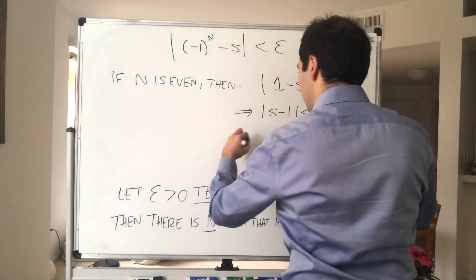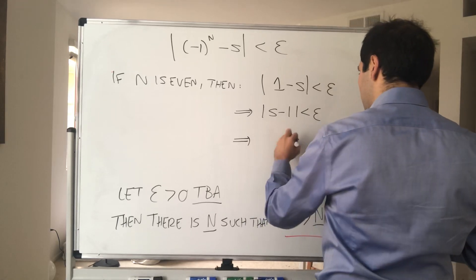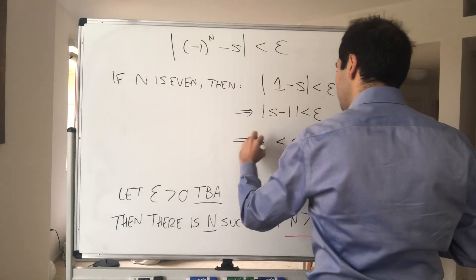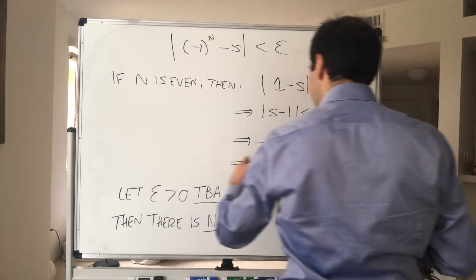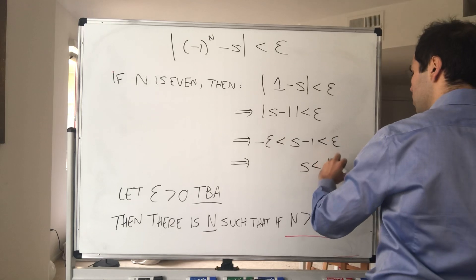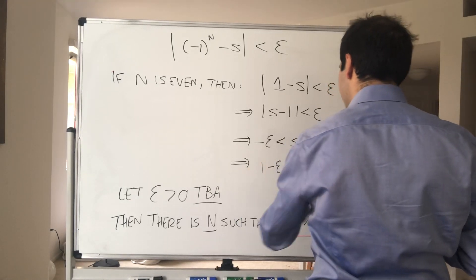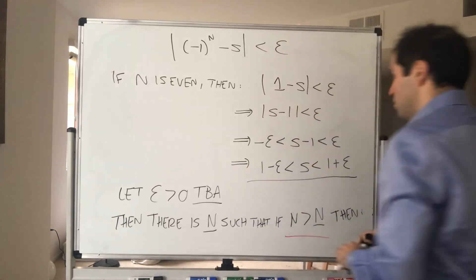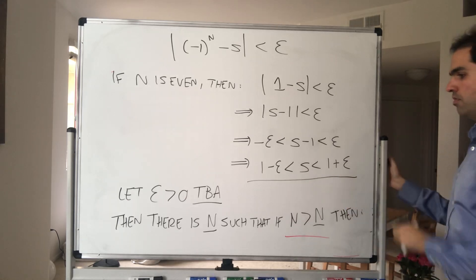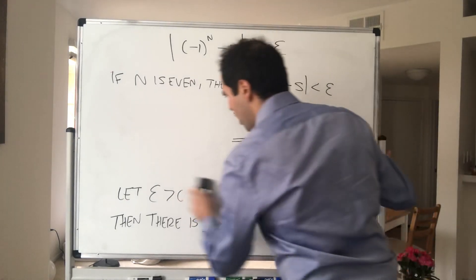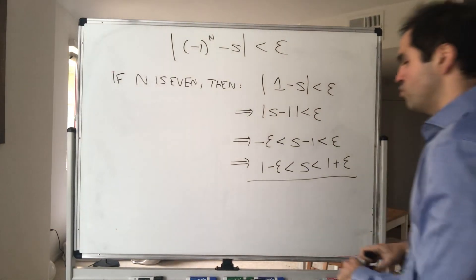So this just tells you that s - 1 is squeezed between -epsilon and epsilon. So in particular, s is very close to 1. So s is between 1 - epsilon and 1 + epsilon. That is one piece of information you get from this, that s is close to 1. And now what we want to show similarly is that s is close to -1.